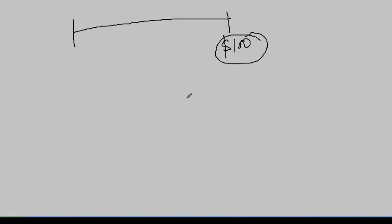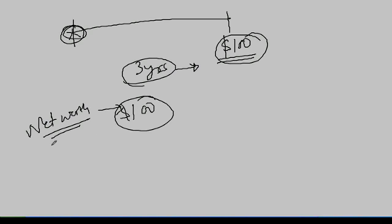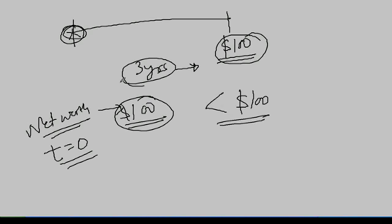Let's see how to find the present value. Present value: suppose you have a very good friend who is giving you $100, but he says he will give you that $100 only after three years. You want to know your net worth. Can you say your net worth is $100 today at t=0? That is not a correct statement, because $100 you will be getting after three years. The value today will be less than $100.